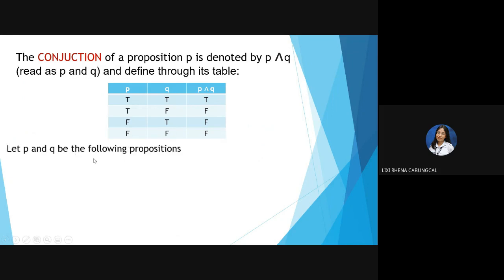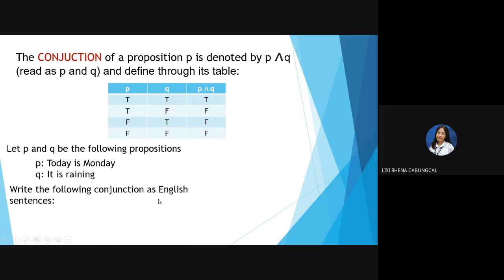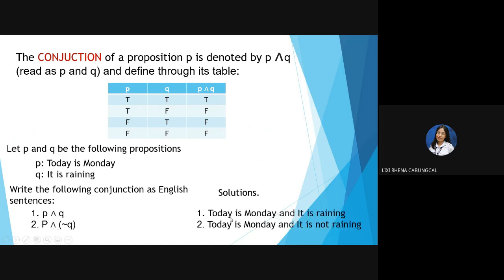Example: Let P and Q be the following propositions — P: 'Today is Monday,' Q: 'It is raining.' Read the following conjunctions as English sentences. Number 1: P ∧ Q → 'Today is Monday and it is raining.' We simply added 'and' to form the conjunction. Number 2: P ∧ NOT Q → 'Today is Monday and it is not raining.' When there is negation, we add NOT.